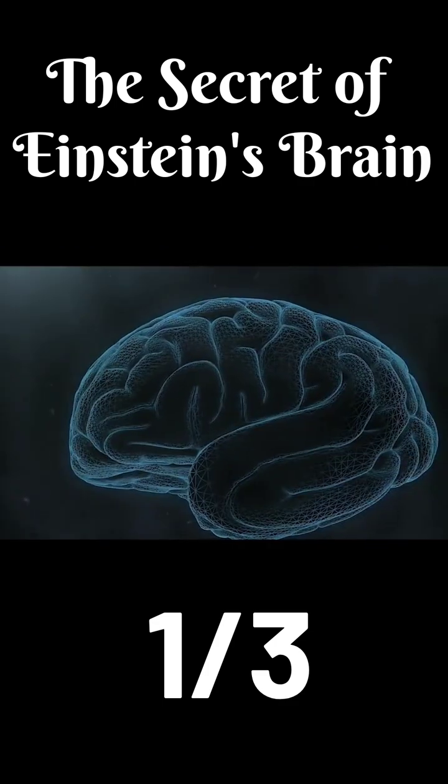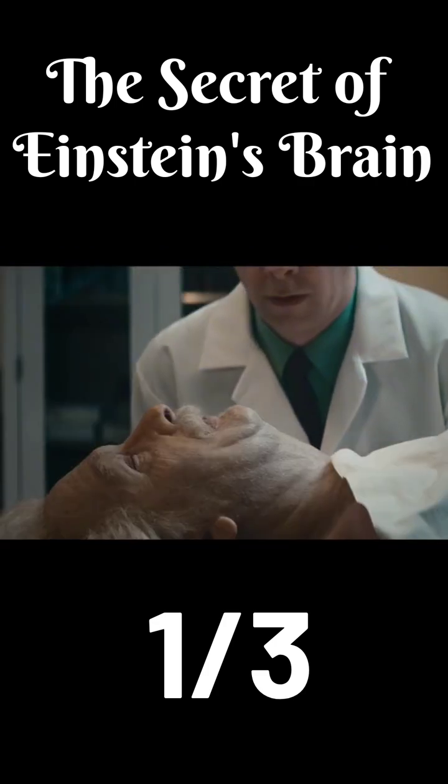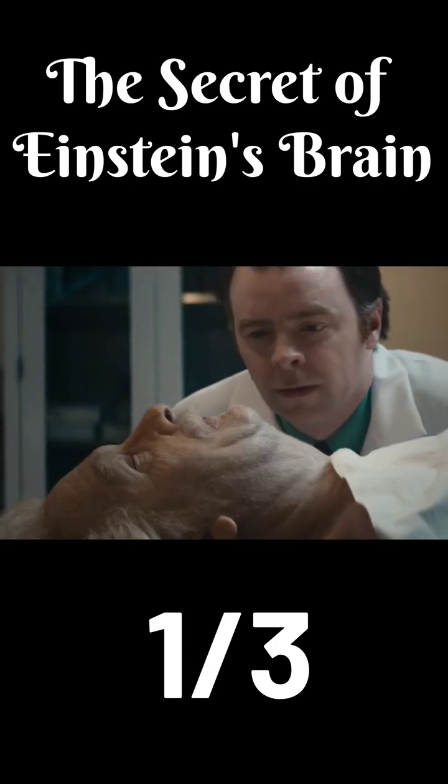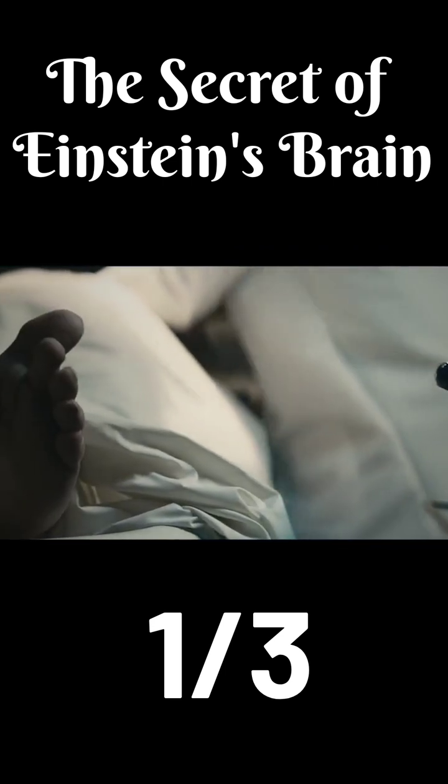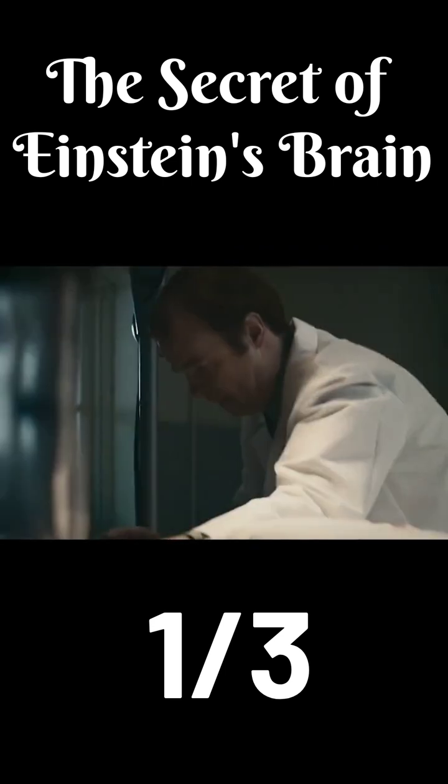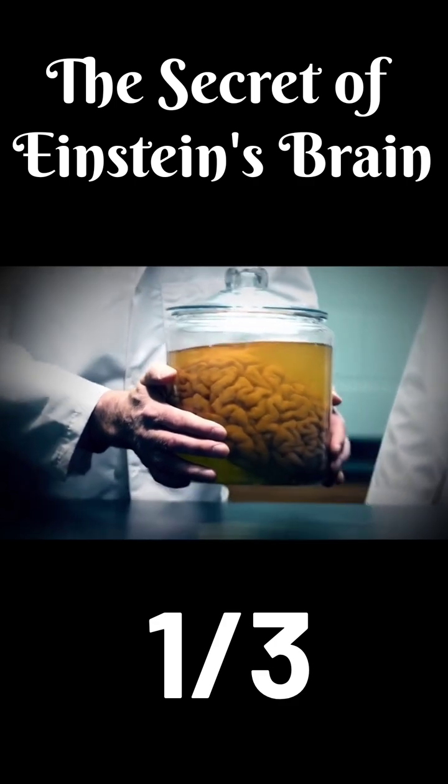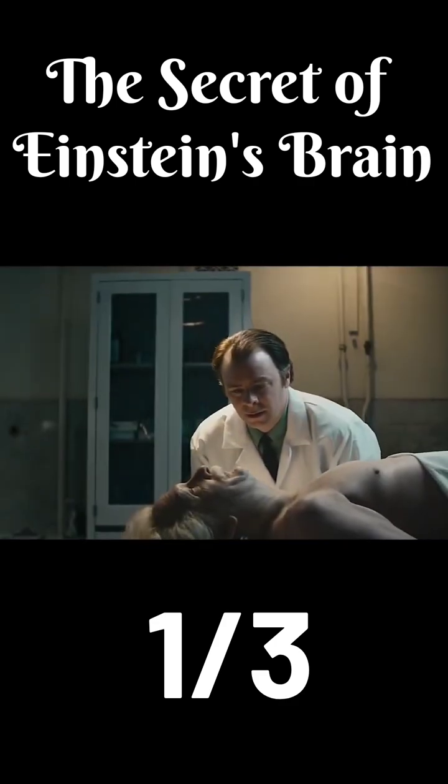Harvey hypothesized that Einstein's brain must be physiologically different from an ordinary person's brain. Driven by this curiosity and without obtaining permission from Einstein's family, Harvey removed Einstein's brain and took it back to his laboratory. Thus, Einstein's brain was stolen.